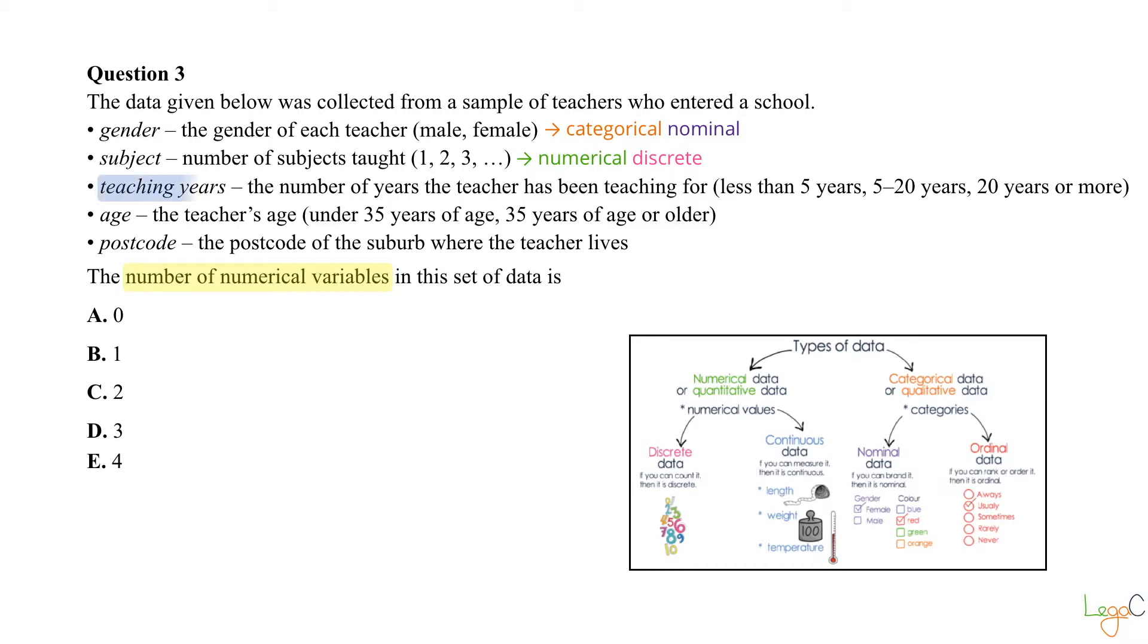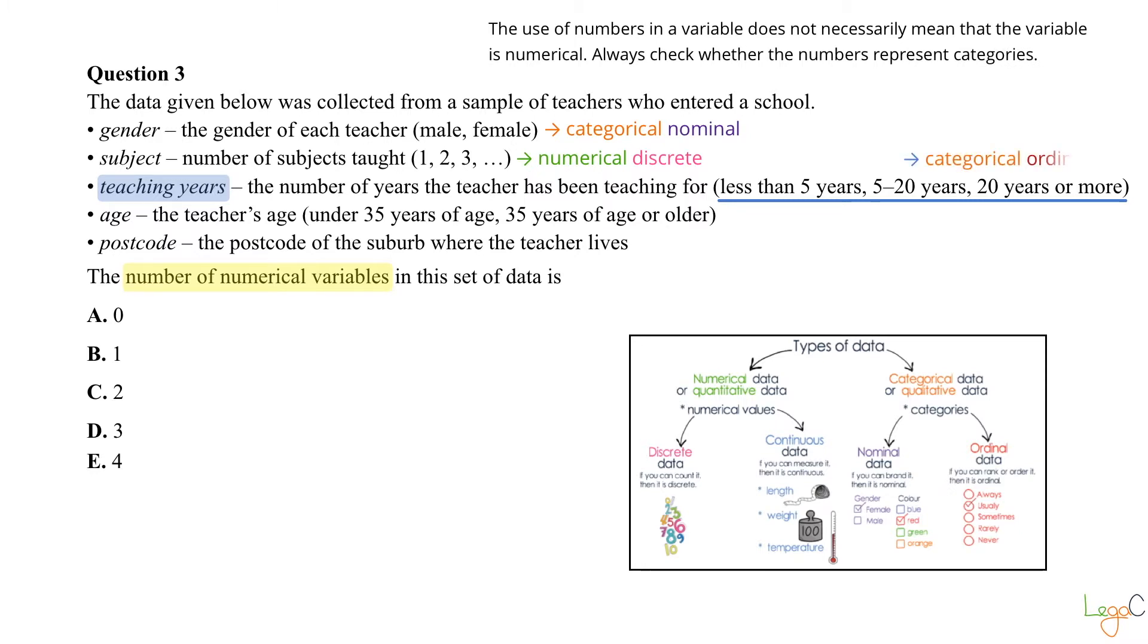Teaching years: the number of years the teacher has been teaching for. Less than 5 years, between 5 and 20, and 20 years or more. Now this is definitely represented by three categories. So again, the use of numbers in a variable does not necessarily mean that the variable is numerical. Always check whether the numbers represent categories. So this variable is categorical ordinal.